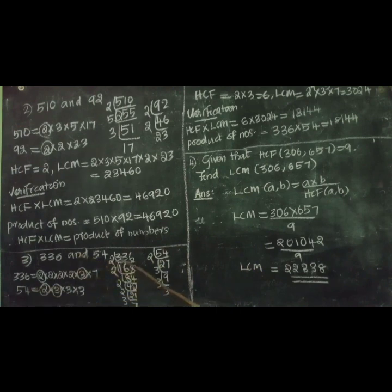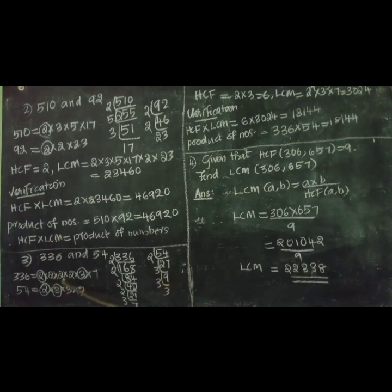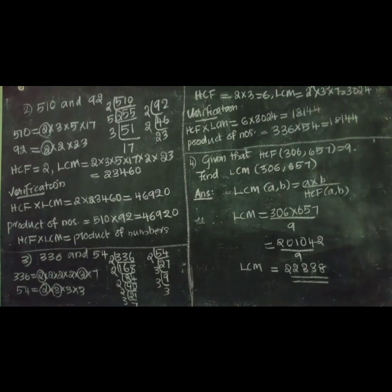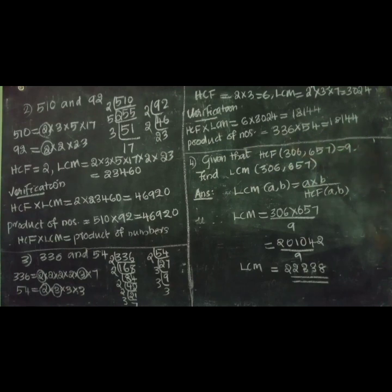The common factors are 2 and 3. So we can write HCF equal to 2 times 3 equal to 6. For LCM, taking all prime factors with their greatest powers: 2 raised to 4 times 3 raised to 3 times 7, which equals 3024. Verification: HCF times LCM equals 6 times 3024 equals 18,144. Product of numbers: 336 times 54 also equals 18,144. So HCF times LCM equals the product of numbers.